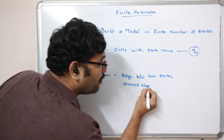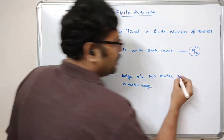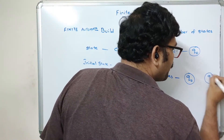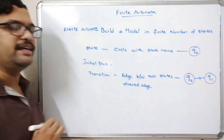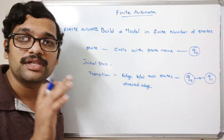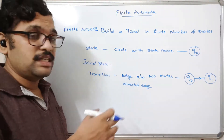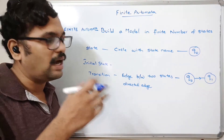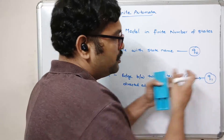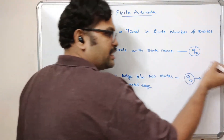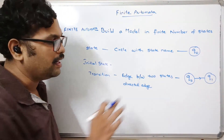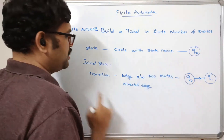So the directed edge has a direction. Let us assume Q-naught and Q1 are different states — the edge between them is called a transition. This transition will be applied whenever you give some input. The alphabet will have symbols, and the process will change its state for every symbol in the alphabet.